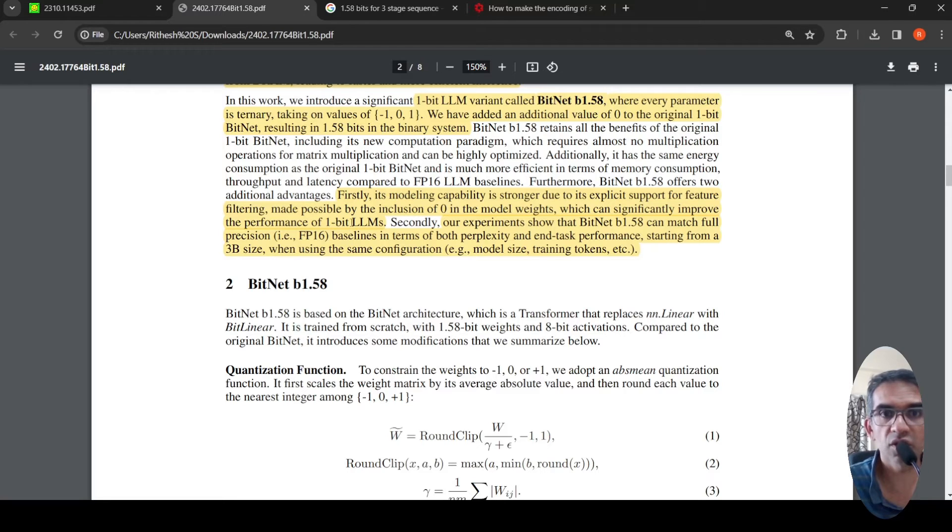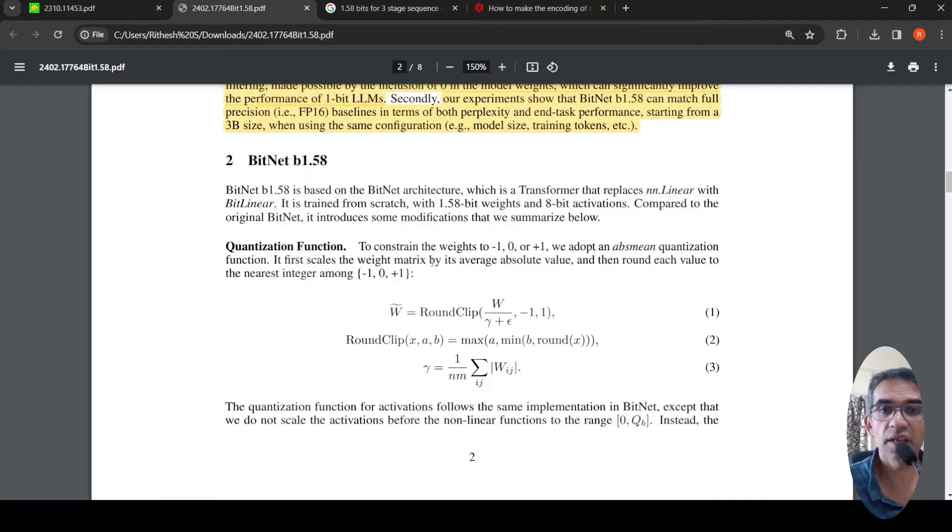This can improve the performance of one bit LLMs. And their experiments show that this BitNet B1.58 can match full precision baselines FP16 in terms of both perplexity and end to end task performance starting from a 3 billion size when using the same configuration model size, training tokens, etc. So what they are saying is that this BitNet B1.58 architecture with one bit LLM or 1.58 bit LLM shows similar performance to your 16 bit floating point LLMs.